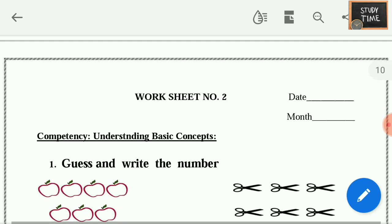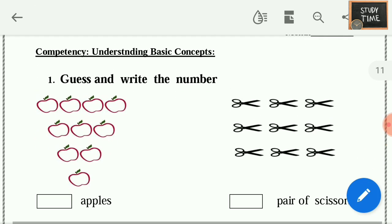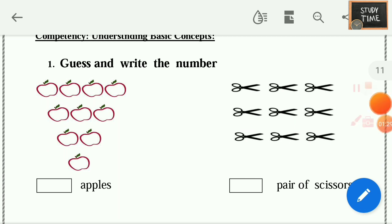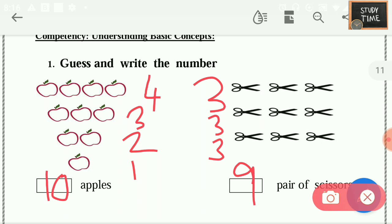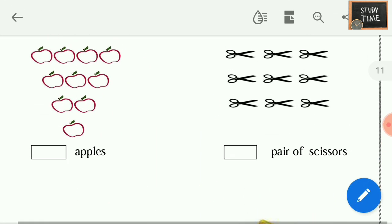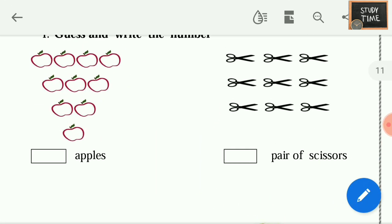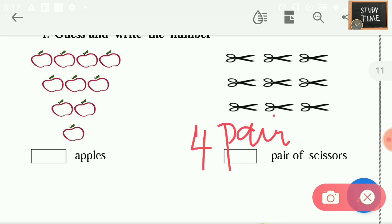Next, guess and write the number. 4 plus 3 plus 2 plus 1 is 10. Here, 3 plus 3 plus 3 is 9 pairs of scissors. So here they are asking, you can write pairs or else you can write apples and scissors.